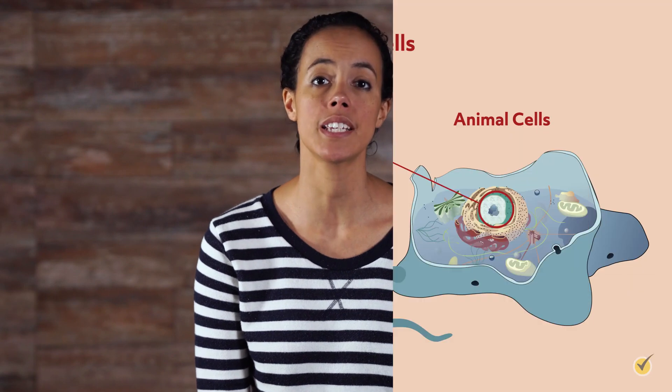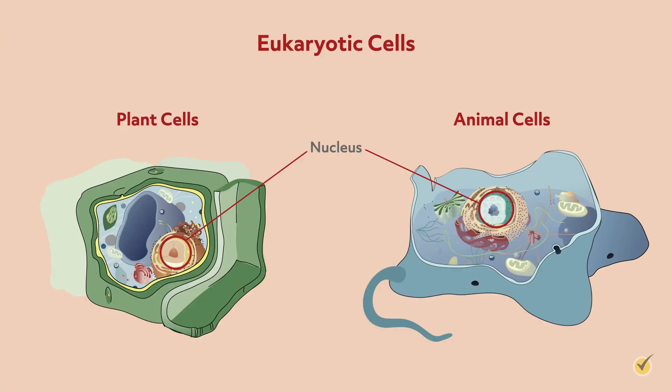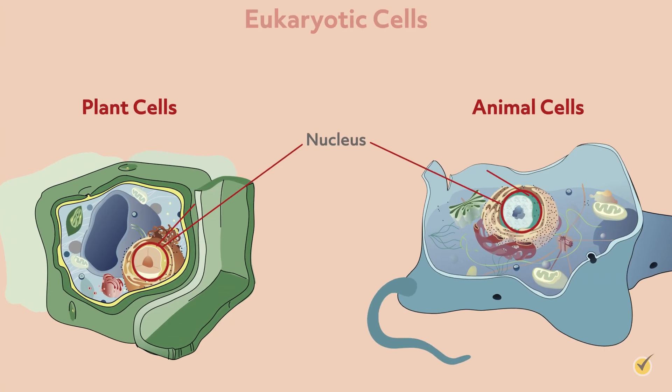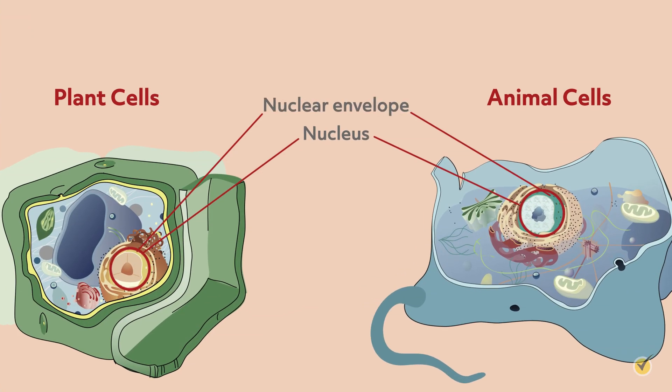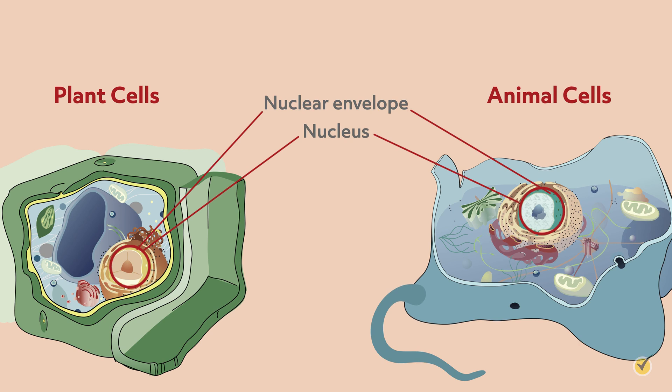Let's talk about some organelles that both plant and animal cells share by starting from the center and working our way out. Both cell types have a nucleus that stores the cell's genetic information. The nucleus is surrounded by a porous bilayer membrane called the nuclear envelope that selectively allows proteins and DNA in and out of the nucleus.